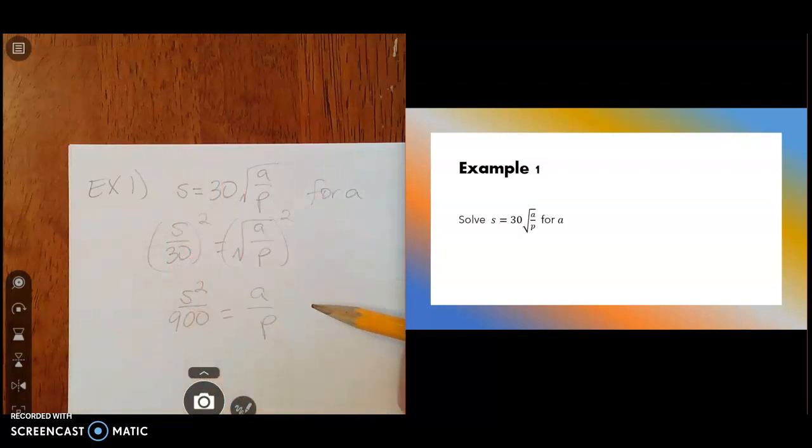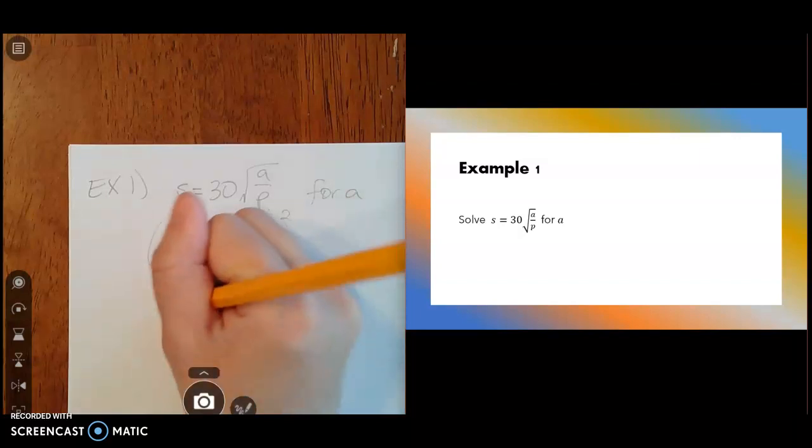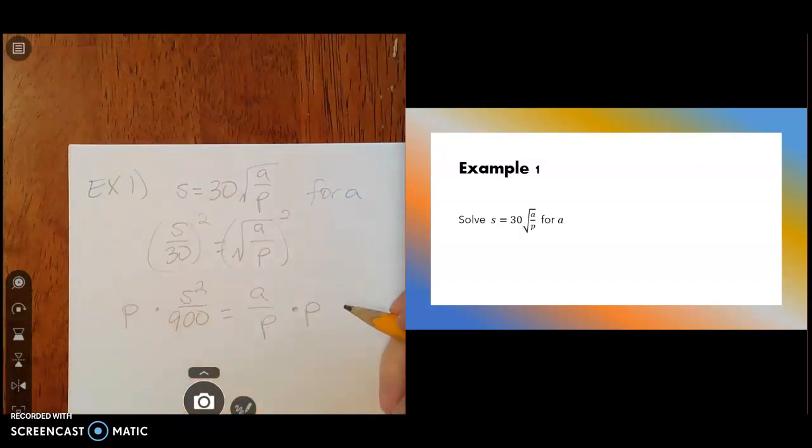All right, we're getting closer. The only thing left to do to get A by itself is undo the P. They're attached by division. It's A divided by P. So the opposite of dividing is multiplying. So I'm just going to multiply both sides of my equation by P.